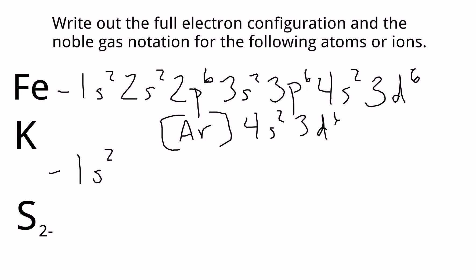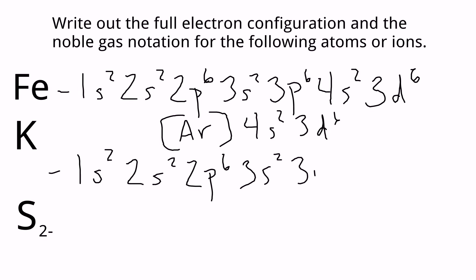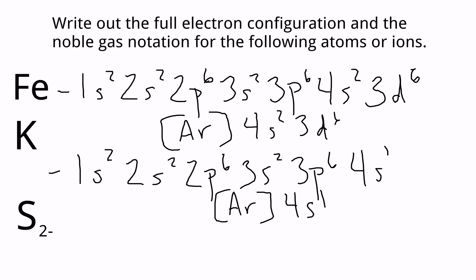For potassium, the full configuration is 1s² 2s² 2p⁶ 3s² 3p⁶ 4s¹. Potassium is in quantum level 4 with only one electron in the 4s orbital. The noble gas notation would be [Ar] 4s¹, since argon is the preceding noble gas.